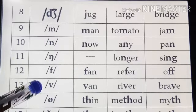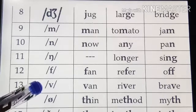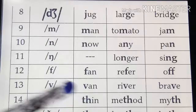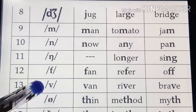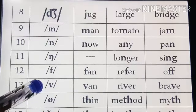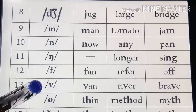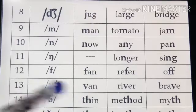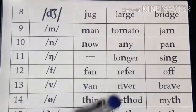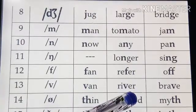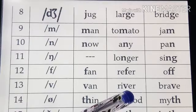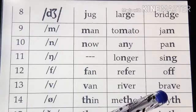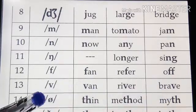This is /v/. The articulation is the same as /f/, but there is more vibration. /v/, /v/. 'Van' — this is not /w/. When we say /w/ we make our mouth round, but for /v/ the upper teeth must touch the lower lip. Examples: 'van', 'river', 'brave'.